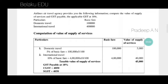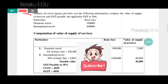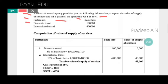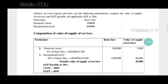Let us see the problem first. An airline air travel agency provides you the following information: compute the value of supply of services and GST payable. The applicable GST rate is 18%. The basic fare for domestic travel is 1 lakh rupees, and for international travel is 4 lakh rupees.